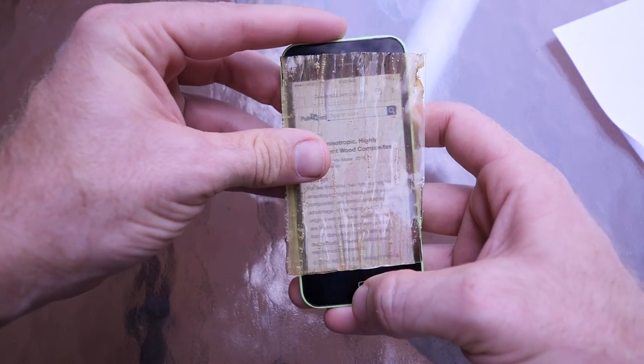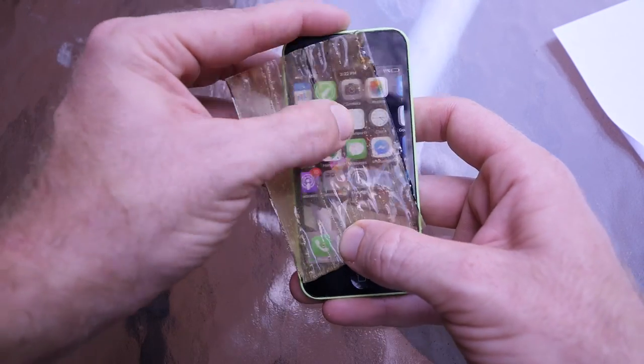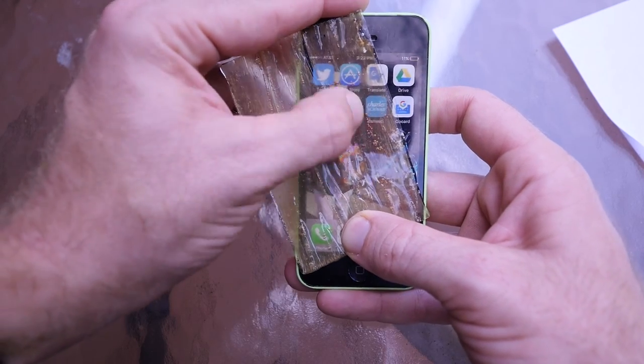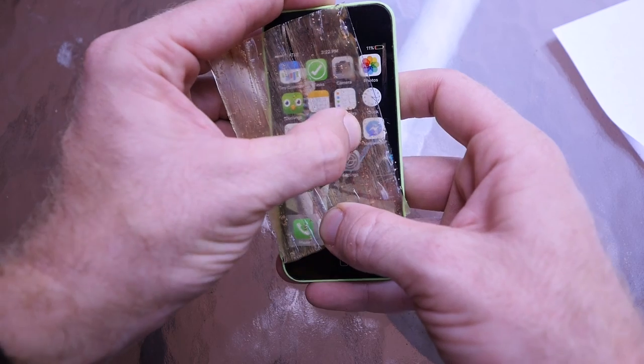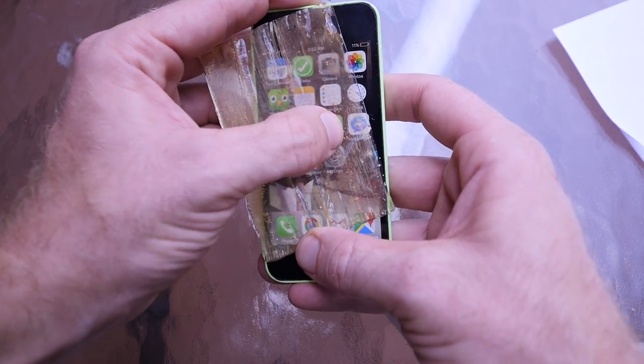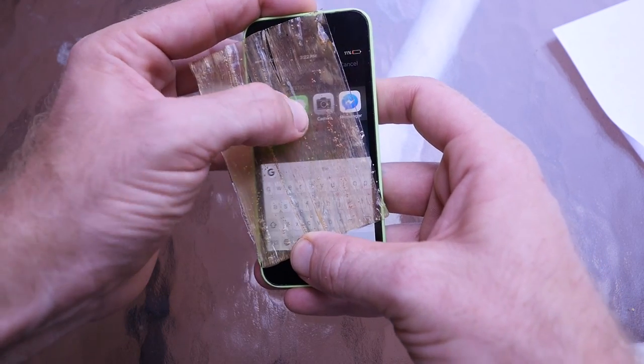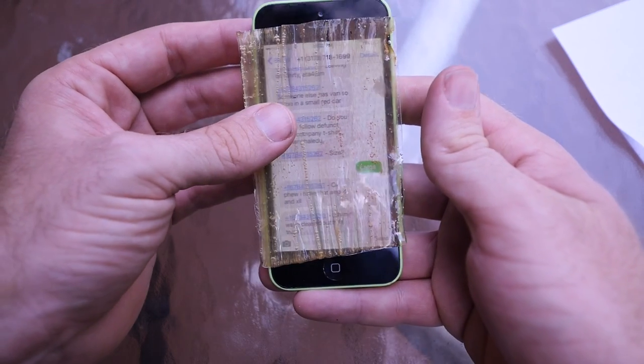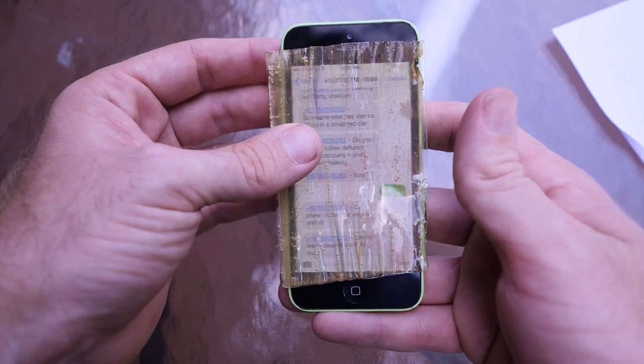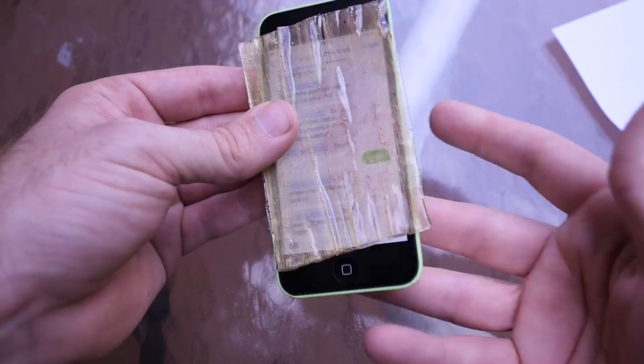So straight through this, these veneers are thin enough and they're also clear enough we can actually use our apps and type. So you could imagine you could have a clear wood cell phone case that you could actually work through, which is nuts.